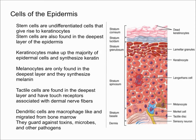After keratinocytes are formed by the stem cells, keratinocytes make up the great majority of epidermal cells and they synthesize keratin, which provides strength to your hair, your skin, and your nails.